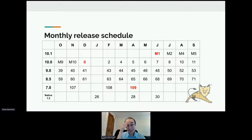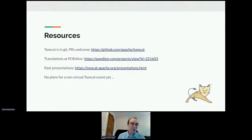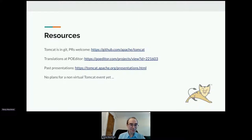The notable releases are highlighted: the first milestone of 10.1, the first stable release of 10.0, and the last release of 7.0. For general resources, we have GitHub for PRs and CI. We can contribute to translations at Poeditor — we have quite a few complete languages now, but German and Spanish are in the middle and it would be nice to see them at 100%. You can also check past presentations for ApacheCon.